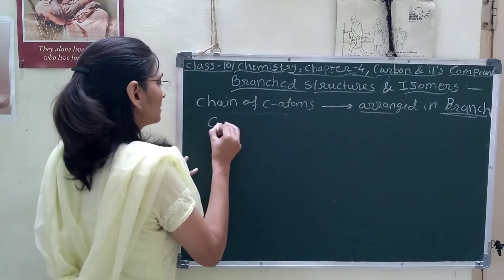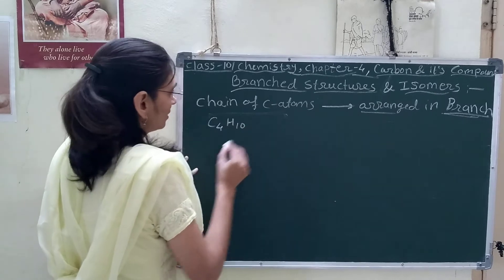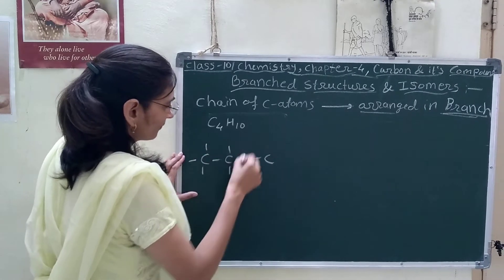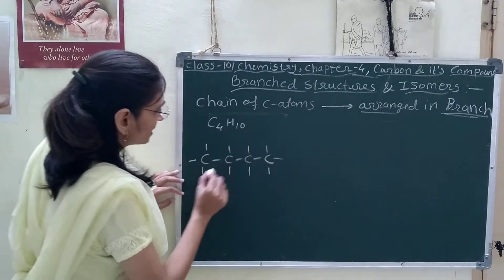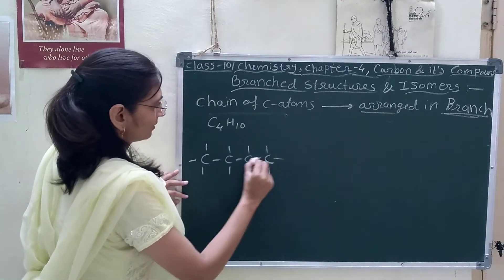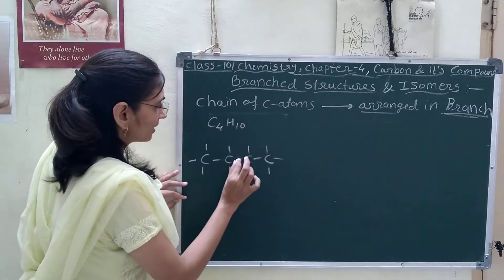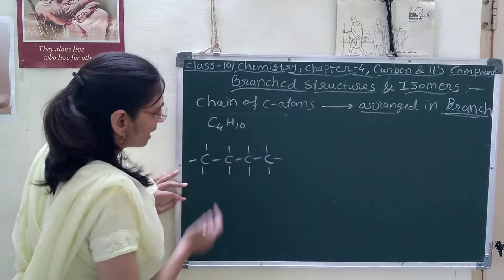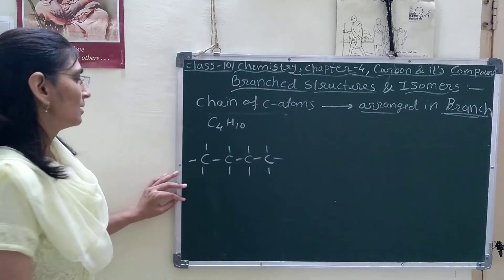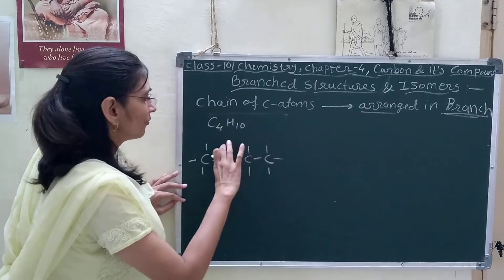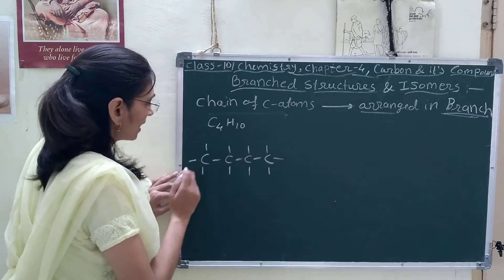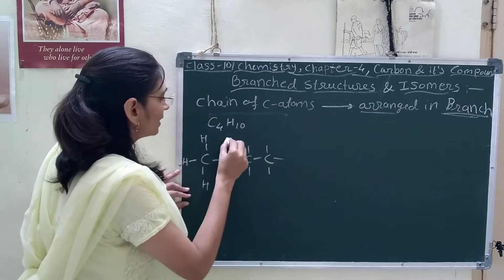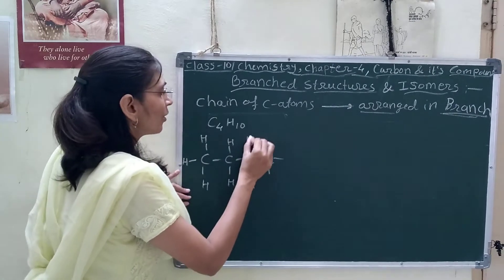First we will take the example of butane — C4 alkane. This is the open chain structure I will draw here first. Each carbon is having four valences, four bonds. One bond is fulfilled by the carbon atom itself. This carbon atom is having two bonds with two carbon atoms — at the neighbor here is one carbon atom, here is one carbon. So these two middle carbon atoms need only two hydrogen atoms for sharing, and the ending carbon atom needs three hydrogen atoms.